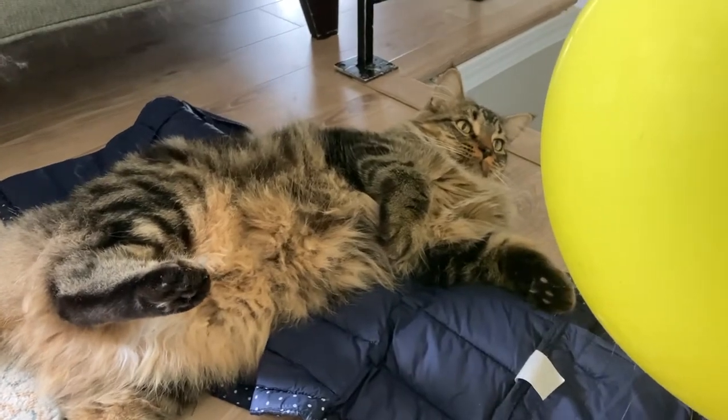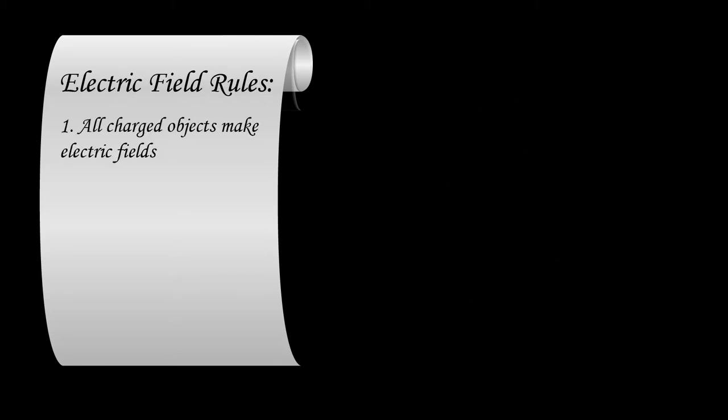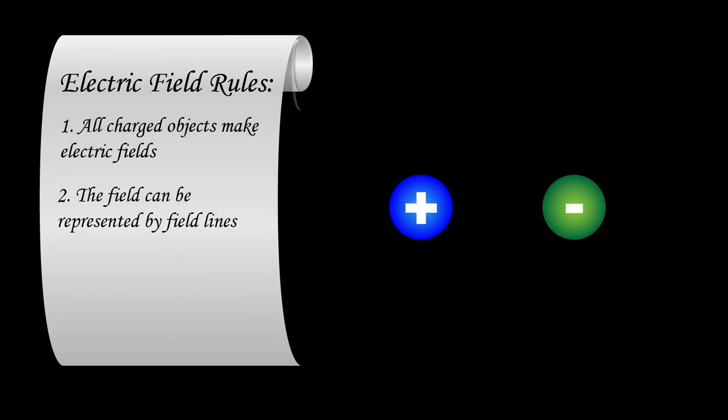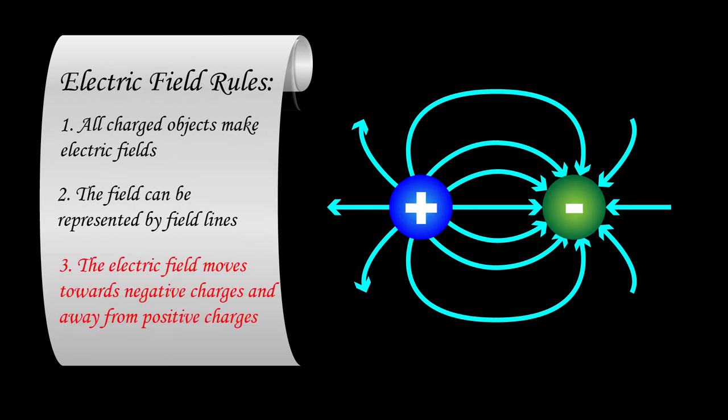So how can you explain all that? Well, first you have to come up with a set of rules called electric field theory. Here are the basics. One, all charged objects create an electric field. Two, the electric field can be represented by field lines, which are these arrows that start at the object and go out to infinity, or start at infinity and eventually run into the object. And three, the electric field lines move towards negative objects and away from positive objects.